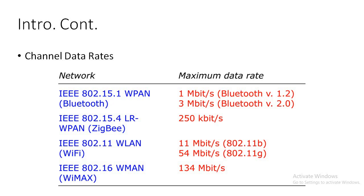The channel data rates of the different standards of IEEE 802 will be different depending on the version. IEEE 802.15.1, known as Bluetooth, has a maximum data rate of 1 MB per second for version 1.2 and 3 MB per second for version 2.0. The 802.15.4 standard, known as Zigbee, has a maximum data rate of 250 KB per second.